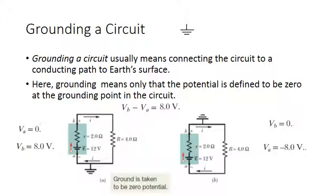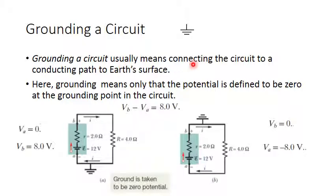Now we talk about grounding a circuit. We use a specific symbol for ground. Effectively, grounding the circuit means making some point a reference defined as zero volts. When we talk about potential difference between points, we make one of those points zero and measure all others with respect to it. This zero-reference point is the ground of the circuit, typically connecting the circuit to a grounding conducting box.